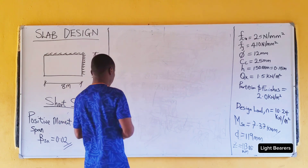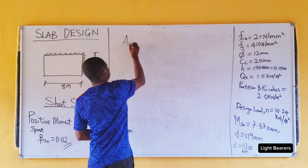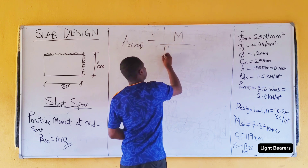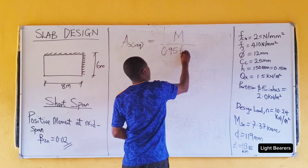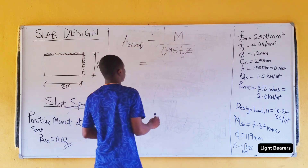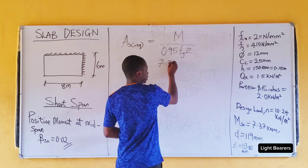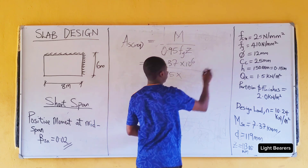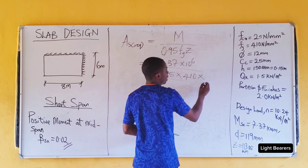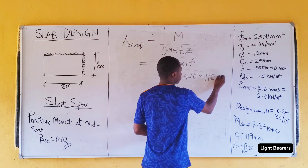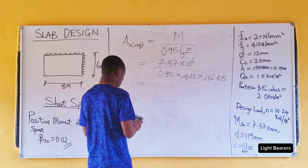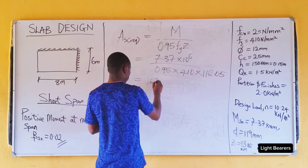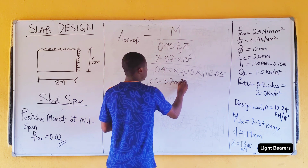Now let's find the area of steel required. AS required equals M all over 0.95 times fy times z. Substituting, we have 7.37 times 10 to the power of 6 all over 0.95 multiplied by 410 multiplied by 113.05, which gives us 167.37 mm squared.